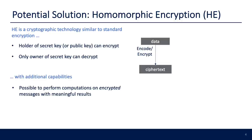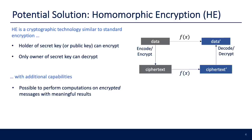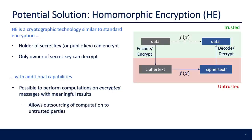If we start with some data and use HE to encode and encrypt this message into a ciphertext, we can apply some function f(x) to the ciphertext and end up with another ciphertext — ciphertext prime. When we decrypt and decode ciphertext prime, we end up with data that is the same as if we had applied f(x) to the initial data directly. This allows us to outsource computation to untrusted parties, performing only the HE encode, encrypt, decode, and decrypt steps in a trusted domain.